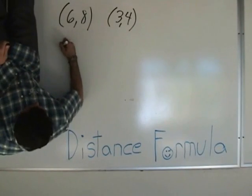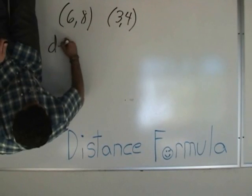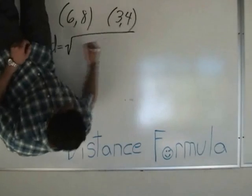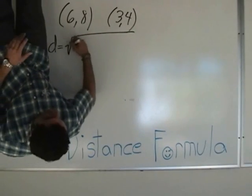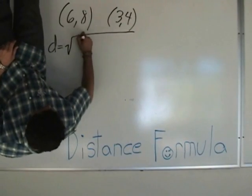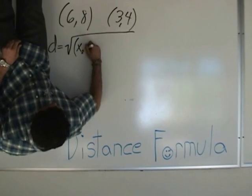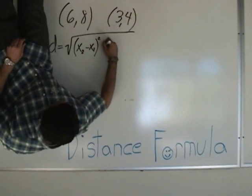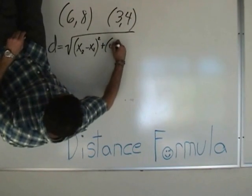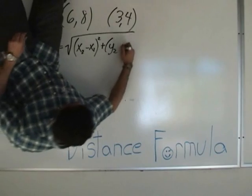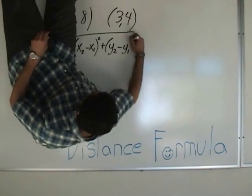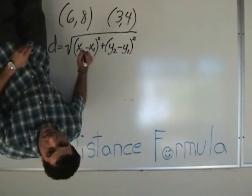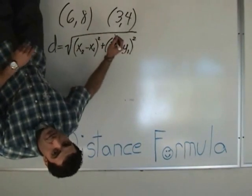Here is the formula. Distance equals — so d equals — a long square root sign, and inside that square root you write (x2 minus x1) squared plus (y2 minus y1) squared. This is the formula we should write every time.